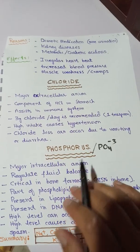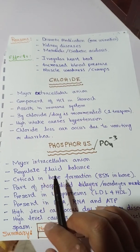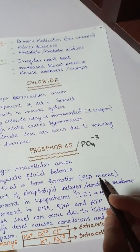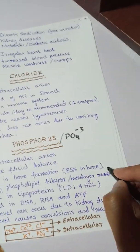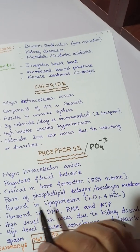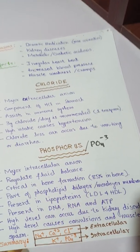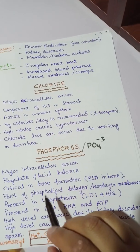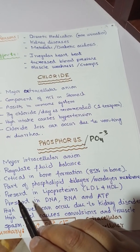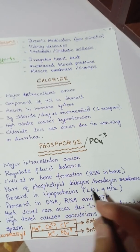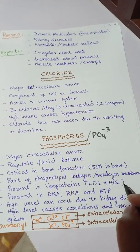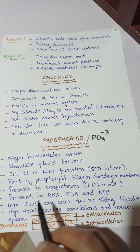Phosphate is the major intracellular anion. It regulates body fluid and is critical in bone formation — 85 percent of the bones are made up of phosphorus in P₄ form. It is part of the phospholipid bilayer, where fatty acids are esterified with the phosphate group. It is also present in lipoproteins such as low-density lipoproteins (LDL) and high-density lipoproteins (HDL).